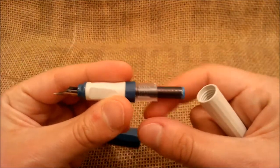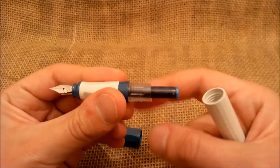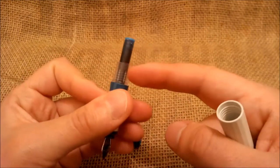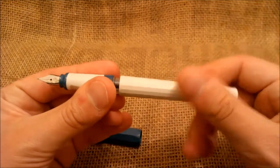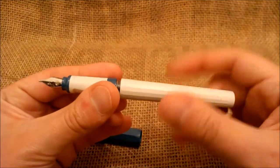This part of the section threads is transparent. Maybe to be easier to see the ink level. Though it isn't really necessary, but maybe this is the reason.